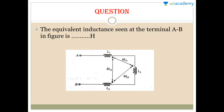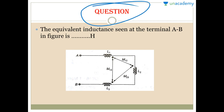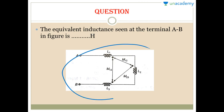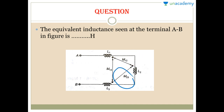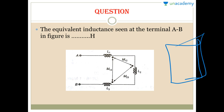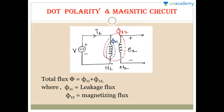Here we have a two-mark question. Read it carefully: the equivalent inductance seen at terminals A and B in the figure is how many Henry? We need to find the equivalent inductance. In the circuit we have inductor 1, inductor 2, and inductor 3, and there is some mutual inductance between them with values L1, L2, L3 which we will see in the solution at the end of the lecture.